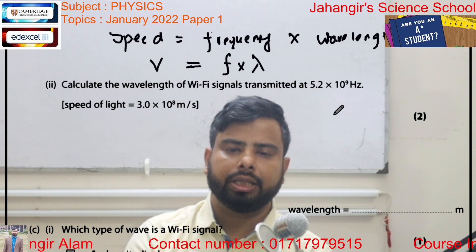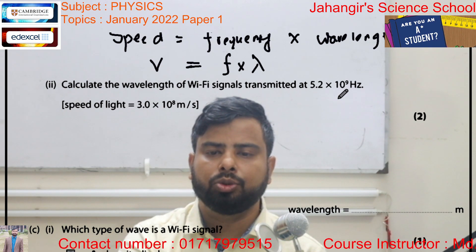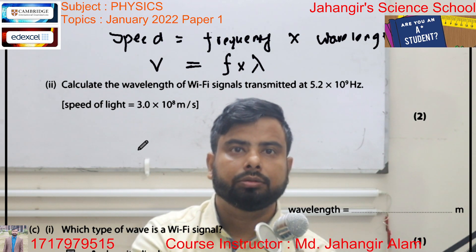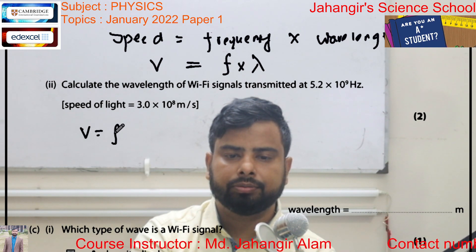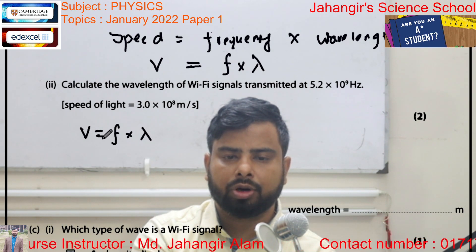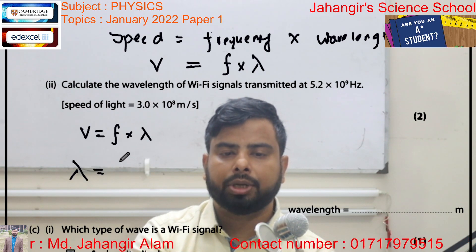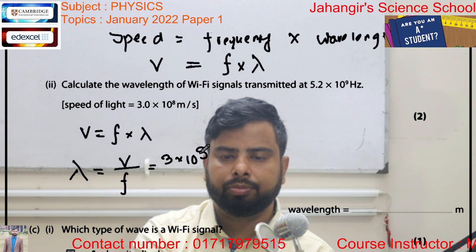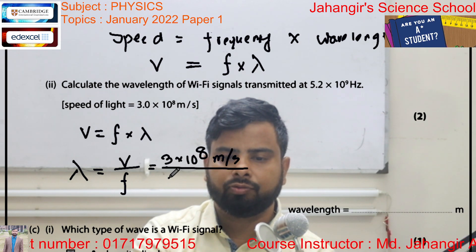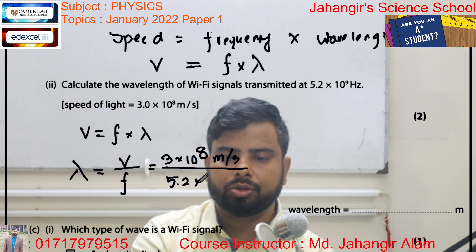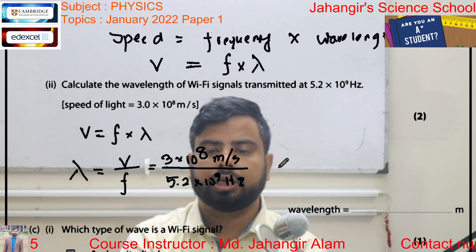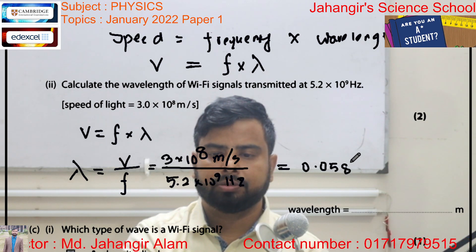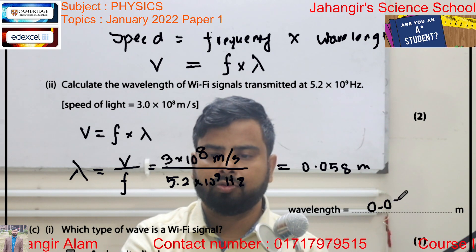Calculate the wavelength of the Wi-Fi signal transmitted at 5.2 × 10⁹ hertz. The speed of light is 3 × 10⁸ meters per second. We know v = fλ, so lambda equals v divided by frequency. Speed is 3 × 10⁸ m/s and frequency is 5.2 gigahertz, so 5.2 × 10⁹ hertz. After calculation, the answer is 0.058 meters.